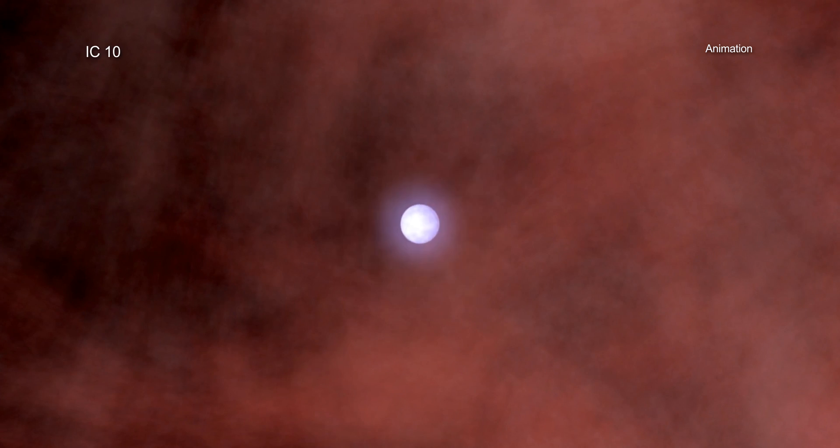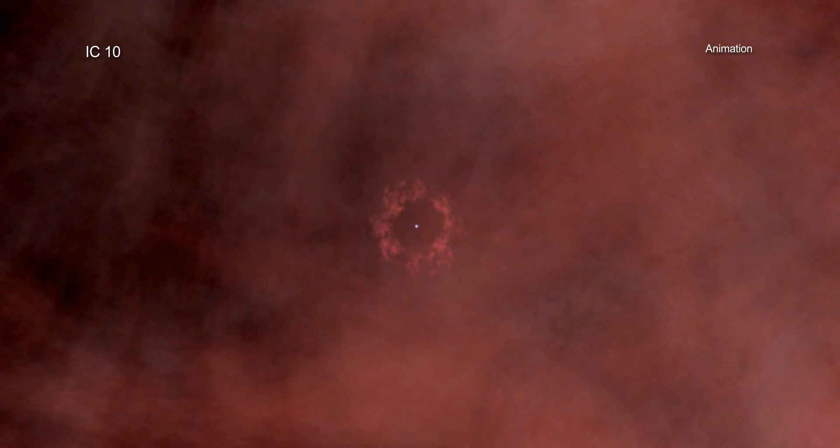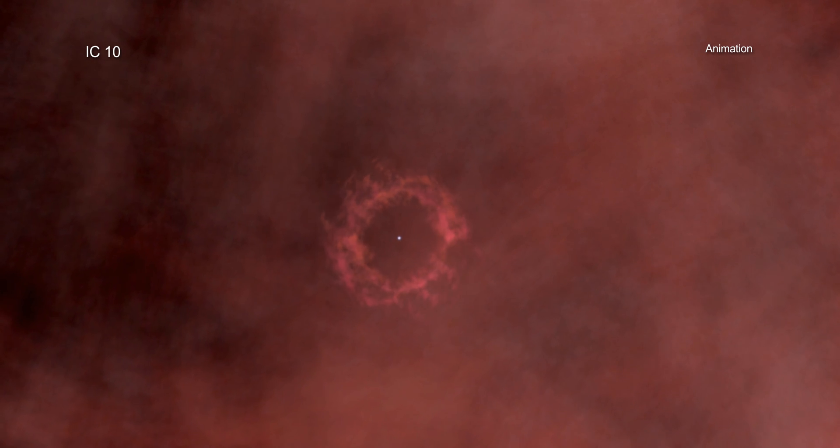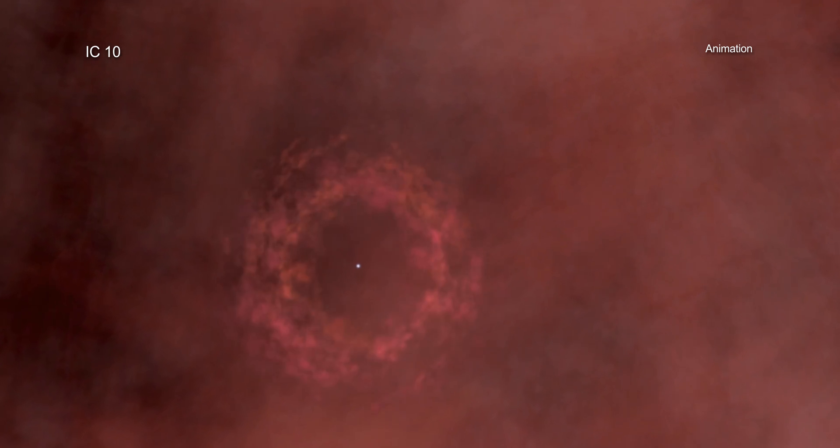When the massive companion star runs out of fuel, it will undergo a catastrophic collapse that will produce a supernova explosion and leave behind a black hole or neutron star.